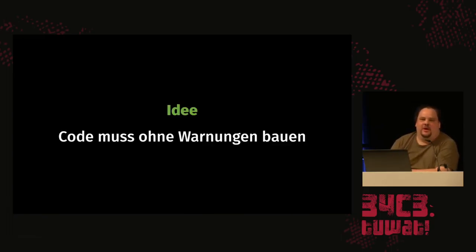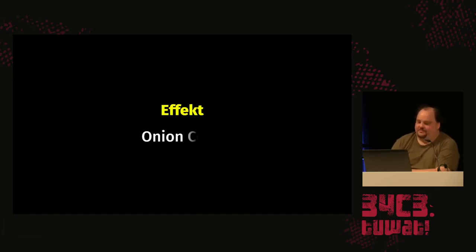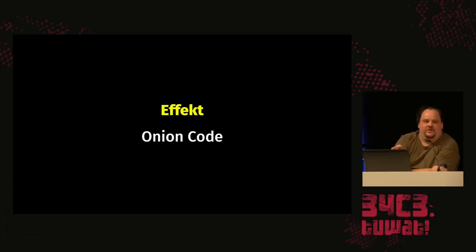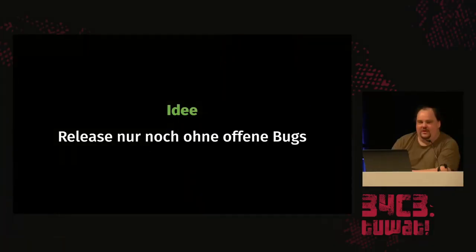We've got code but we don't trust what it does. First idea: remove the compiler warnings. Good idea, but the effect — there's already a term for it — is onion code. You have a huge chunk of legacy code with tons of warnings, nobody has looked at it in five years, somebody finds a bug, but they can't check in the fix without fixing all the warnings. They don't understand the code, so they add a little layer that just intercepts and fixes that one bug without touching the actual code. When multiple people do that, you get layers — you get an onion. If you see that, burn it with fire.